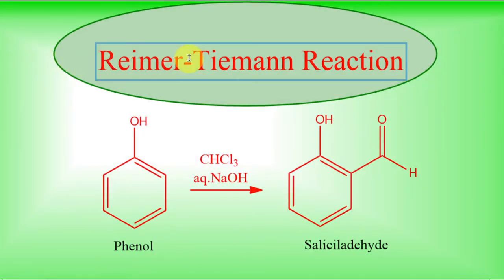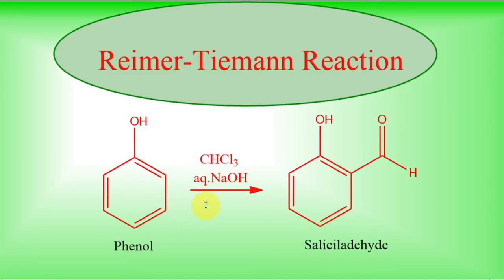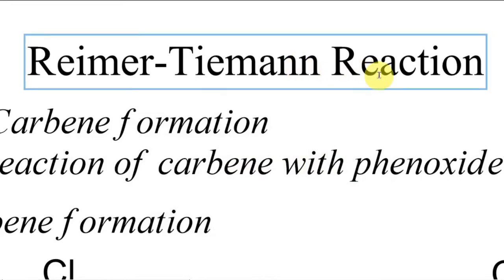Let us talk about the Reimer-Tiemann reaction. In the Reimer-Tiemann reaction, a phenol gets converted into the corresponding aldehyde in the presence of chloroform and alkali. The starting material could be phenol, its derivatives, or even some heterocyclic rings. The product is the corresponding aldehyde — the CHO group is called a formyl group, so this reaction is a formylation reaction. Formylation happens at the ortho position; if ortho is occupied, it happens at the para position. A drawback of this reaction is the low yield.